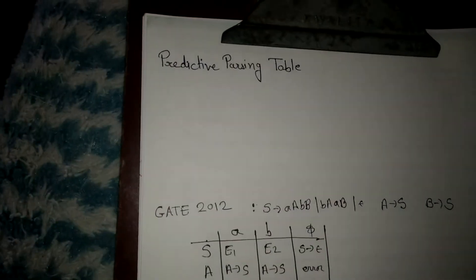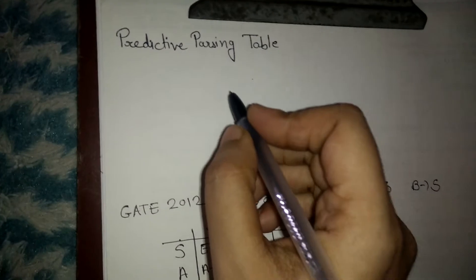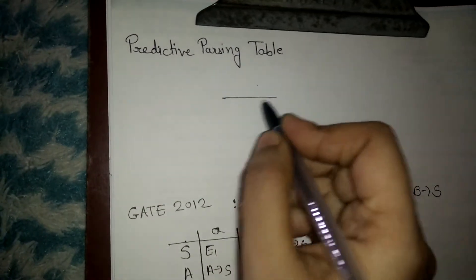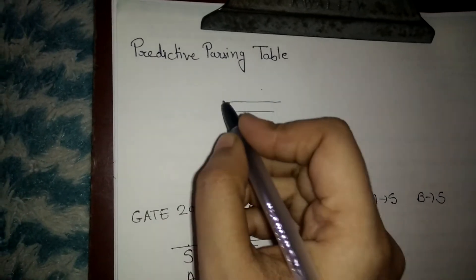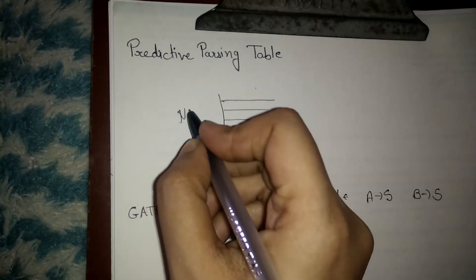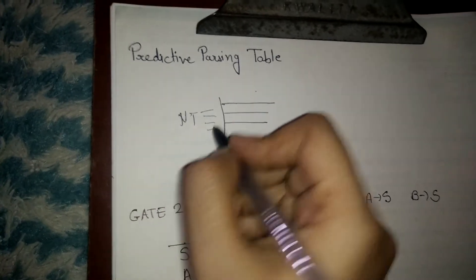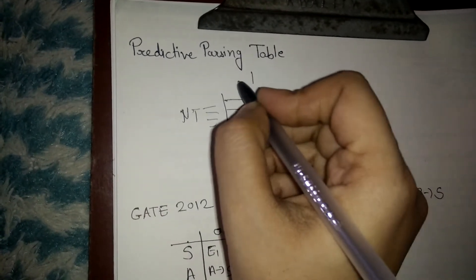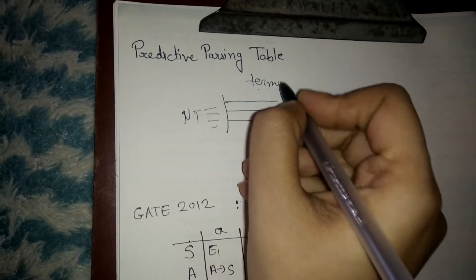The next topic is how to draw the predictive parsing table. In a predictive parsing table, we have rows and columns where each row represents a non-terminal and each column represents a terminal.